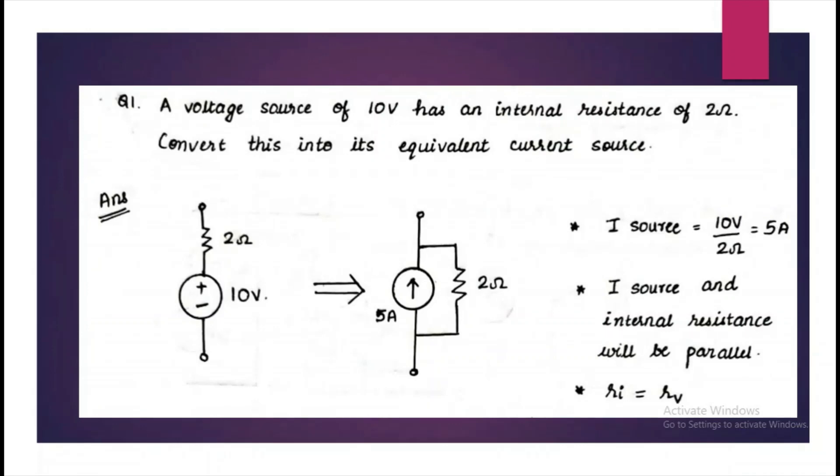In order to find the equivalent current source, divide the voltage source by the resistance. We will get 5 Ampere.